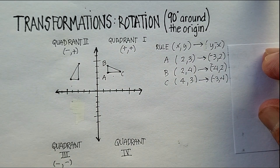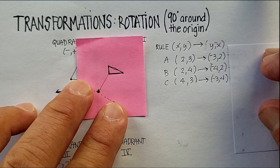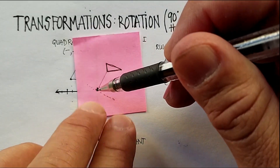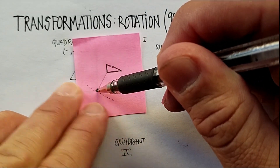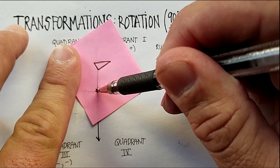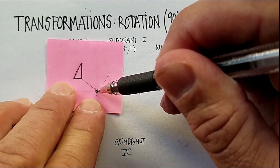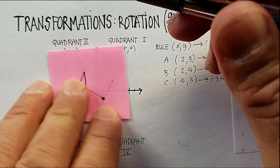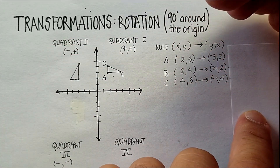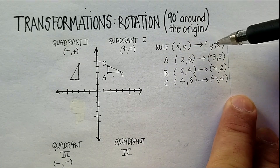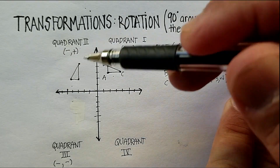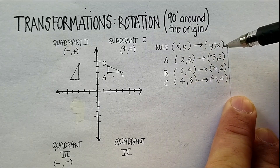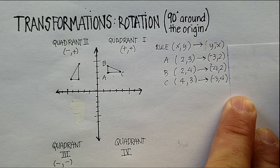Sure enough, when I rotate the triangle it lands right where we predicted. The triangle moved into a new position, right where we calculated it would be. So remember the rule: whenever you rotate 90 degrees counterclockwise, swap the x and the y, then change the sign of the new x value.